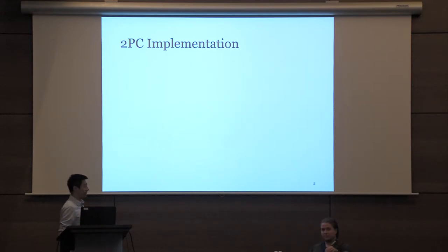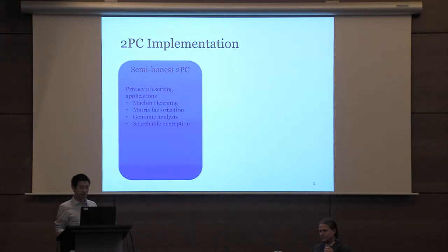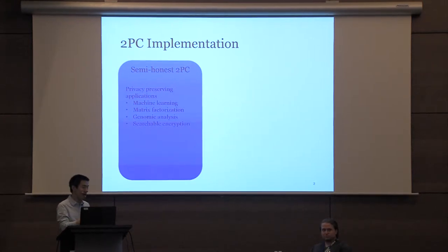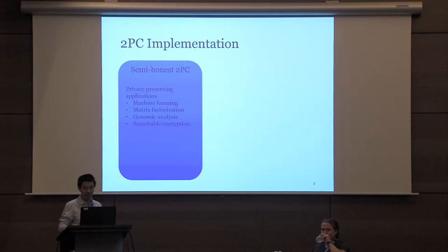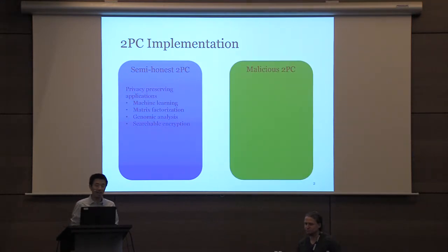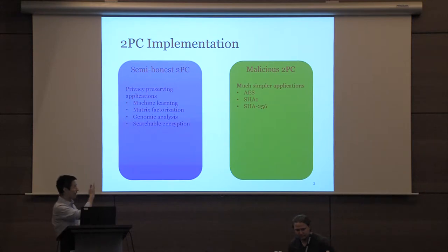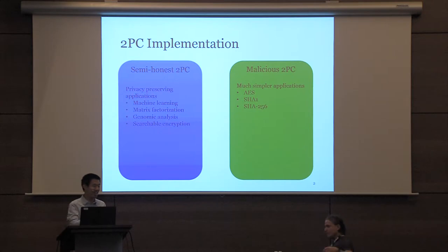Let's first have a high-level view of two-party computation implementations. On the one hand, we have a lot of implementations and systems for semi-honest 2PC, and we have developed tons of applications including privacy-preserving machine learning, matrix factorization, genomic computation, and more. On the other hand, when we look at malicious 2PC, we only have AES, SHA-1, and SHA-256, and that's all.